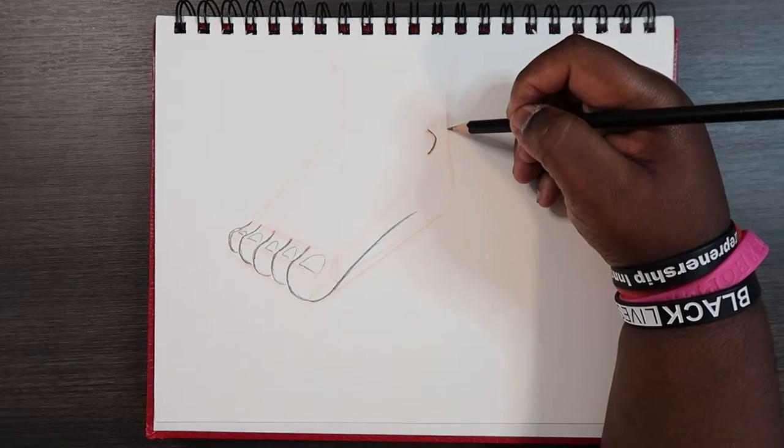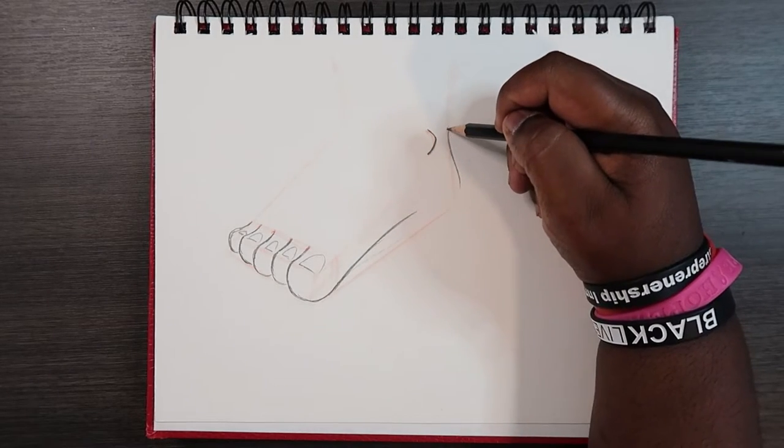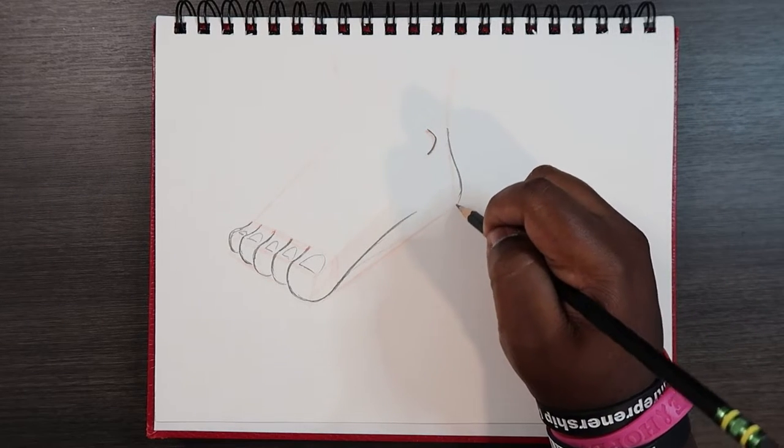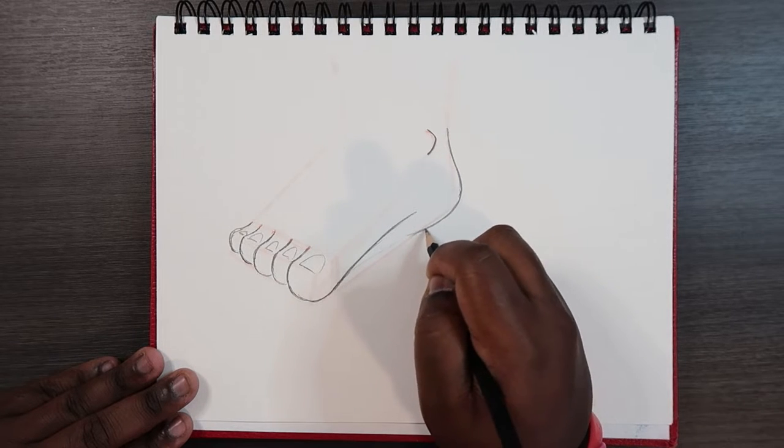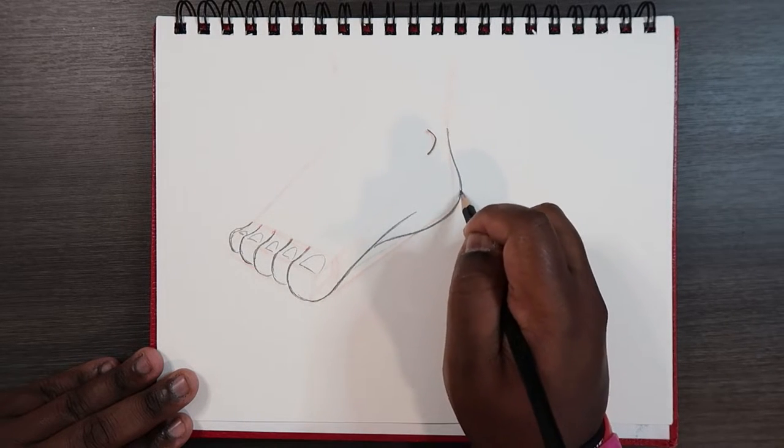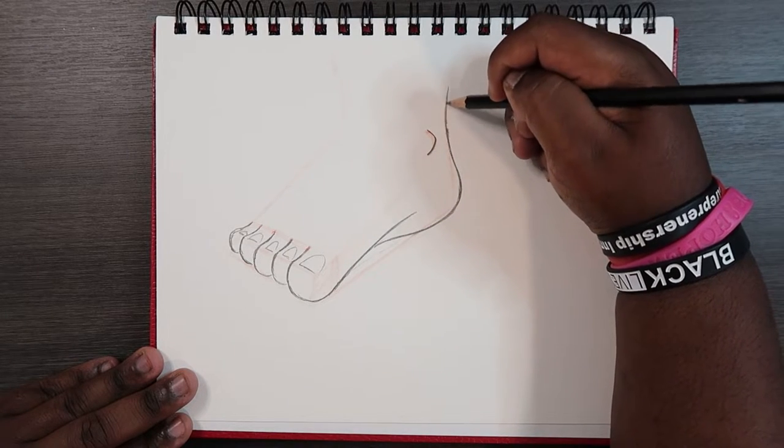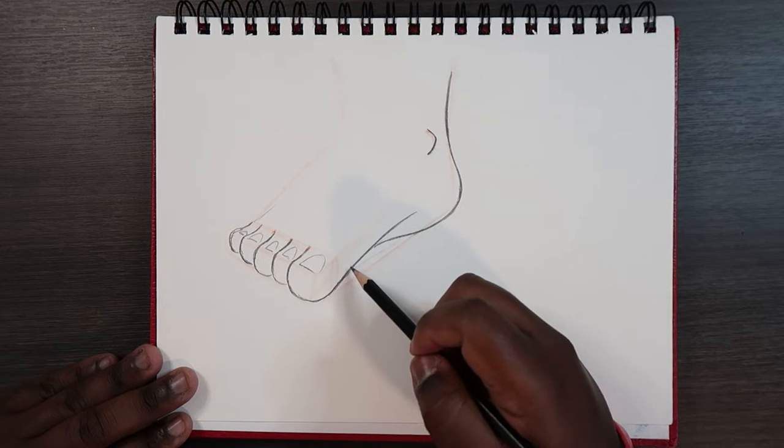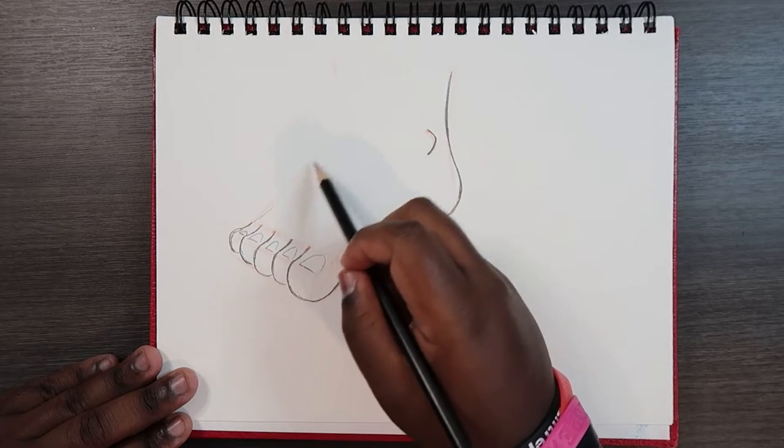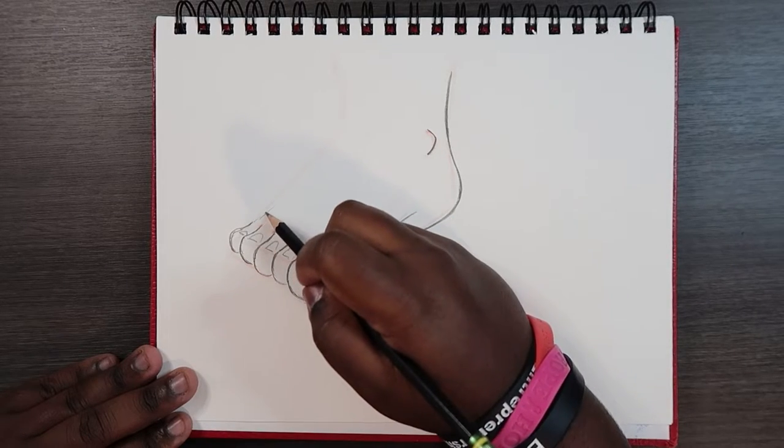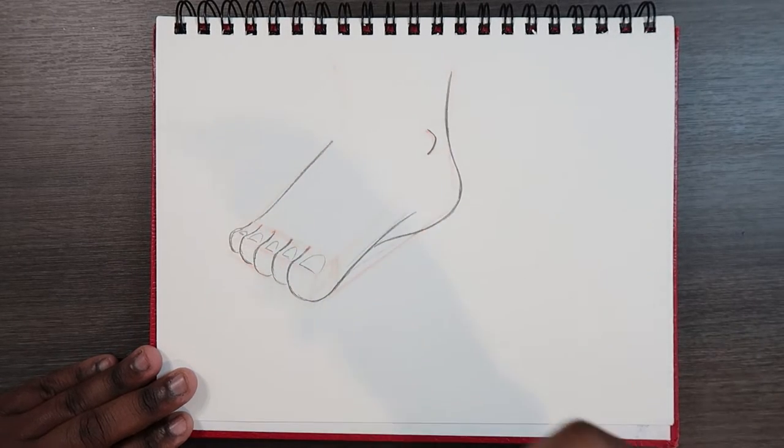Right here where the leg is, right at that ankle, we're gonna begin to make the heel. And then we're gonna curve back into the foot like so. And then the rest of the leg is pretty self-explanatory. You see how we drew this line here? We're gonna kind of match that line with the bridge of the foot, which is this line up here. But it's okay if it's a little off.